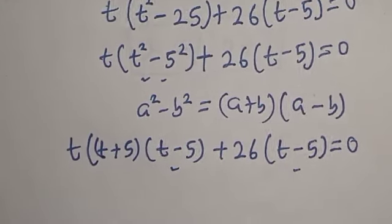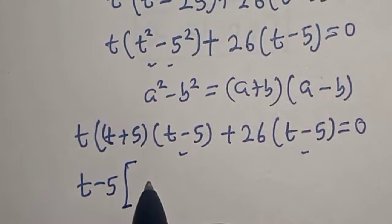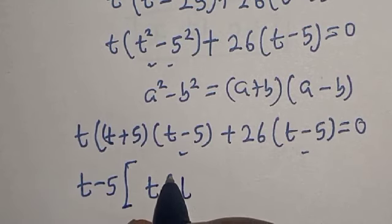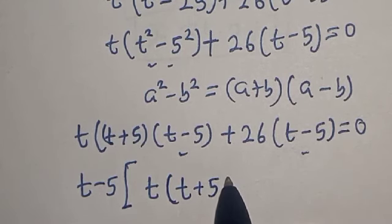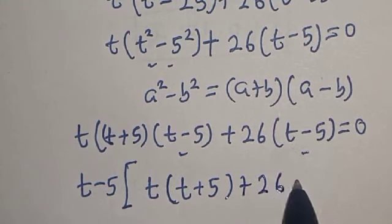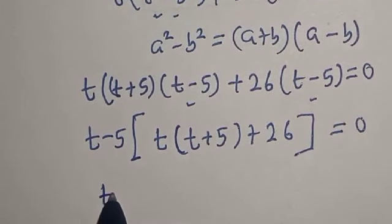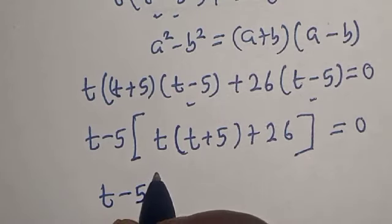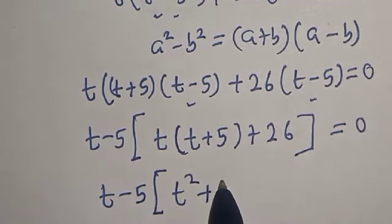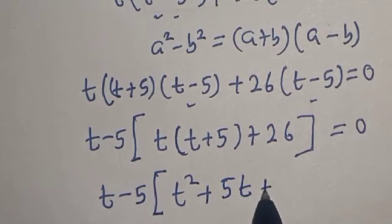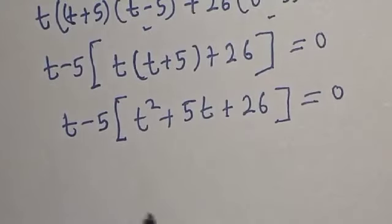The factor t minus 5 is common. Bringing it out, we have t minus 5 bracket t times t squared plus t times 5, giving us t minus 5 bracket t squared plus 5t plus 26 is equal to 0.